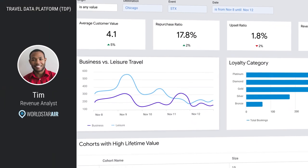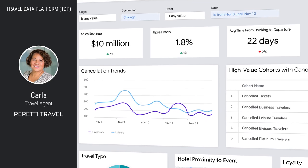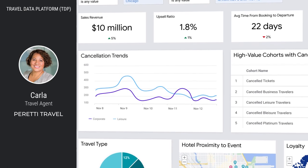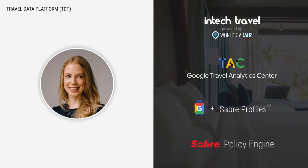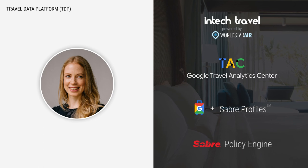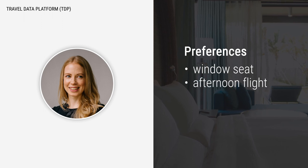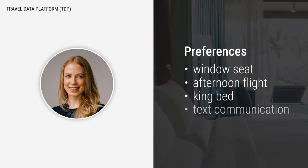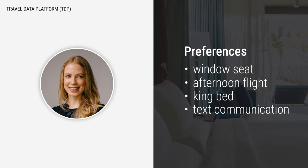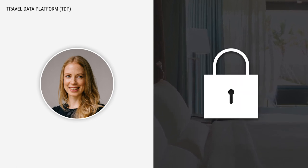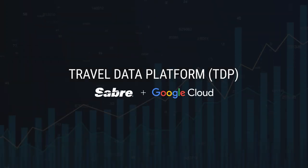A travel data platform is a fundamental building block in creating a new marketplace for personalized travel that connects people with experiences that matter. By harnessing data from multiple sources, a TDP will provide players in the travel ecosystem a more comprehensive view of their customers. Over time, the TDP will continue to learn more about traveler behaviors and enhance its artificial intelligence and machine learning algorithms — done securely and in compliance with privacy regulations. Knowing their customers better can help travel providers create truly targeted campaigns that are more likely to lead to conversions and improve the traveler experience.